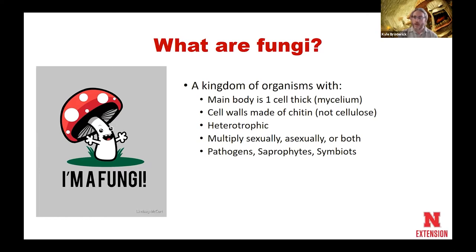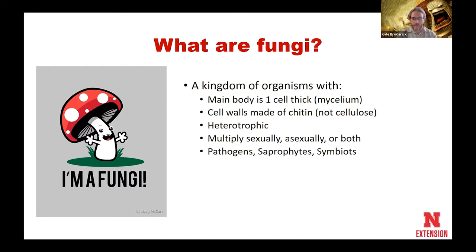One thing that all fungi have in common is their main body is only one cell thick. That mycelium, or that thread-like structure that you see, is only going to be one cell thick. Their cell walls are made of chitin. Similar to plants, fungi do have cell walls, but with plants those cell walls are made of cellulose — that's one of the ways we can differentiate them.